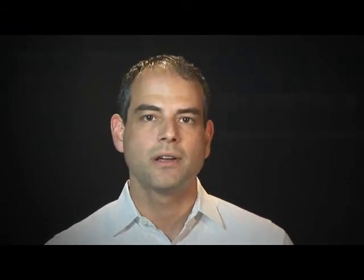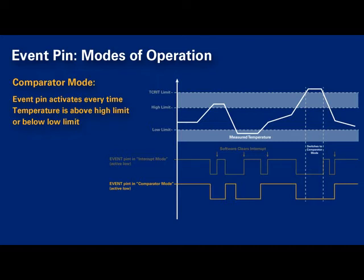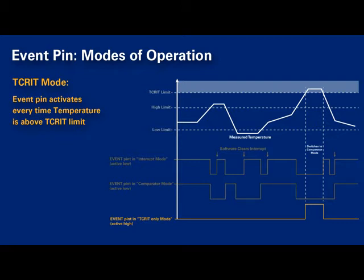There are several modes of operation for the thermal sensor's event pin. In interrupt mode, every time a temperature threshold is crossed, the event pin asserts and must be de-asserted through software. In comparator mode, the event pin asserts on each threshold crossing and automatically clears on the subsequent crossing. T-critical mode only observes the T-crit temperature setting, which is the highest level used to trigger emergency events like system shutdown. Each limit has programmable hysteresis to avoid metastability problems when hovering around a given temperature.